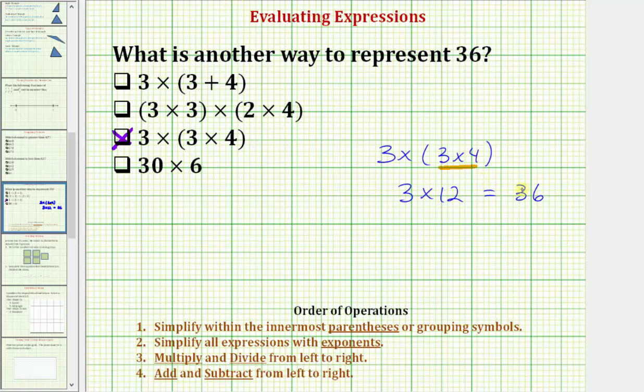For the last expression we have 30 times six, which we should recognize doesn't equal 36, so we can stop and go on to the next question. But while we're here, for a quick review, 30 times six is equal to 180, not 36. I hope you found this helpful.